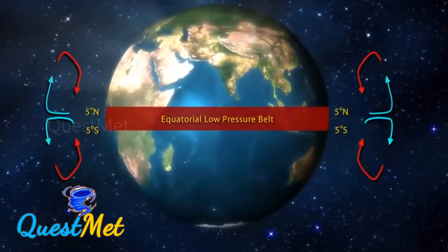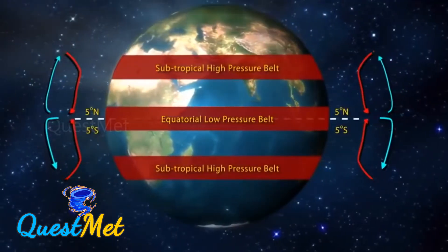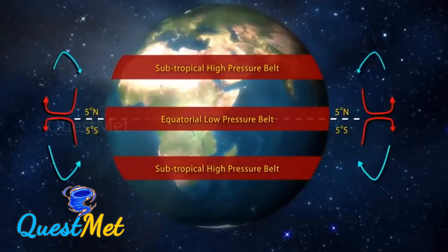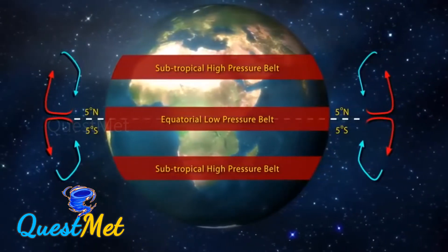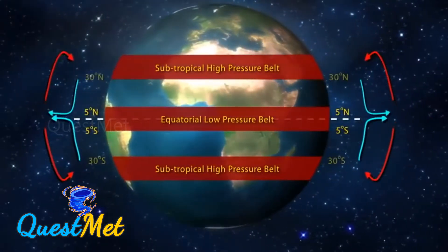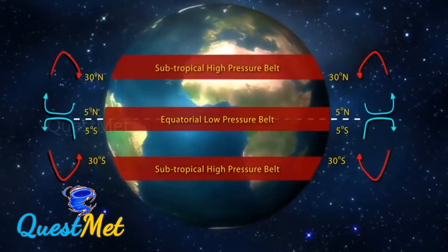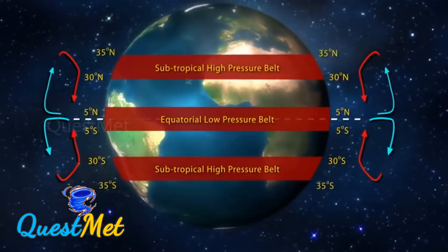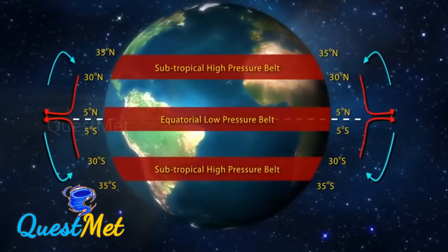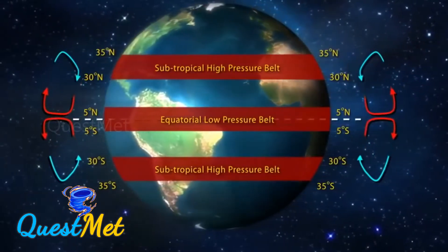To put this in perspective for our Indian subcontinent, anti-clockwise motion of winds in the northern hemisphere is associated with a low pressure system. The clockwise motion of wind would mean a high pressure.